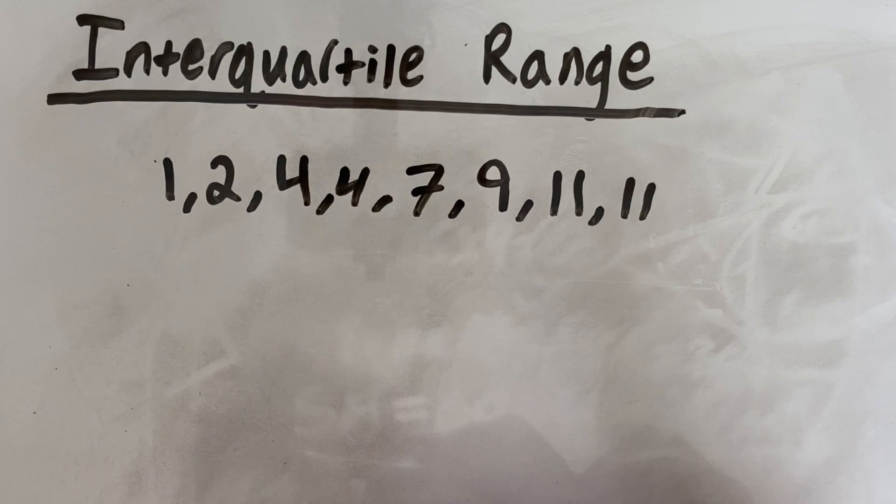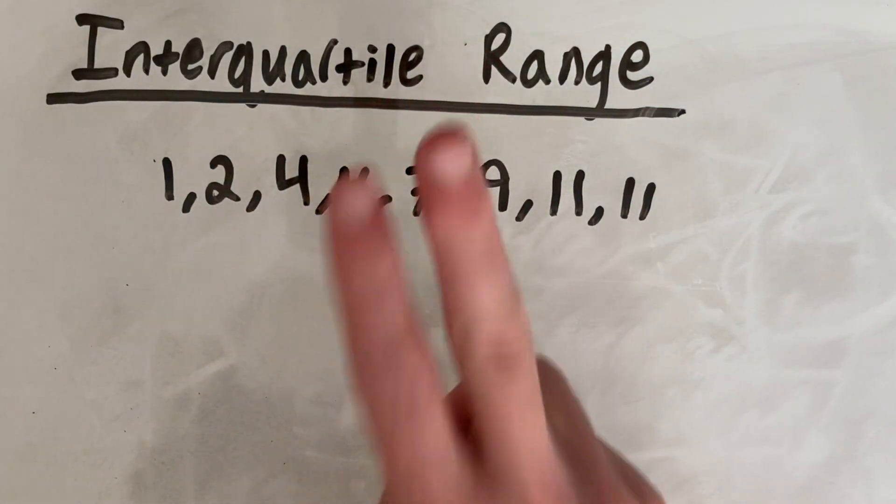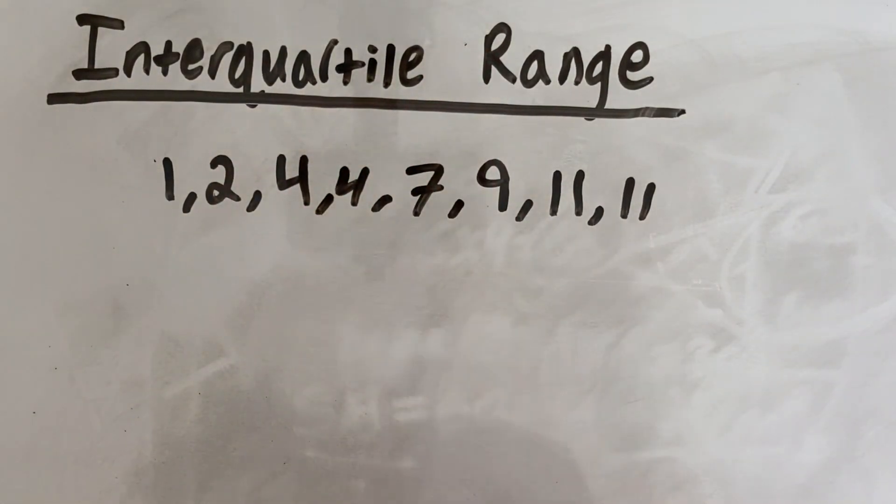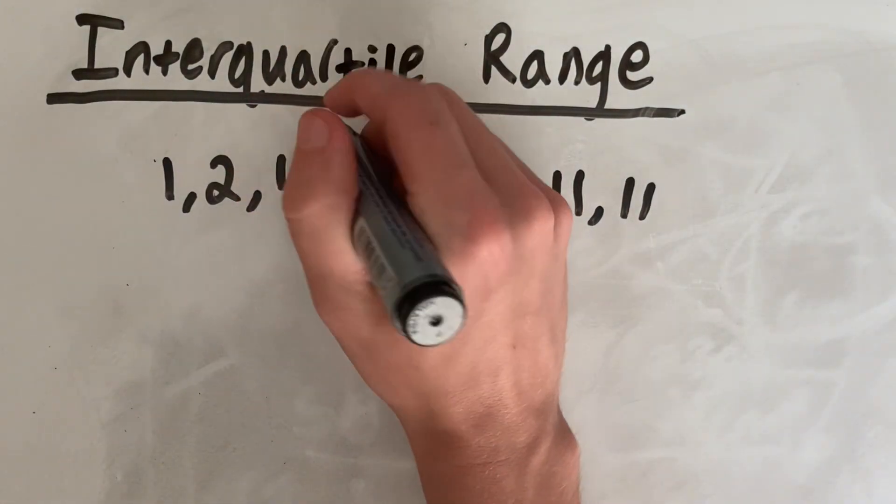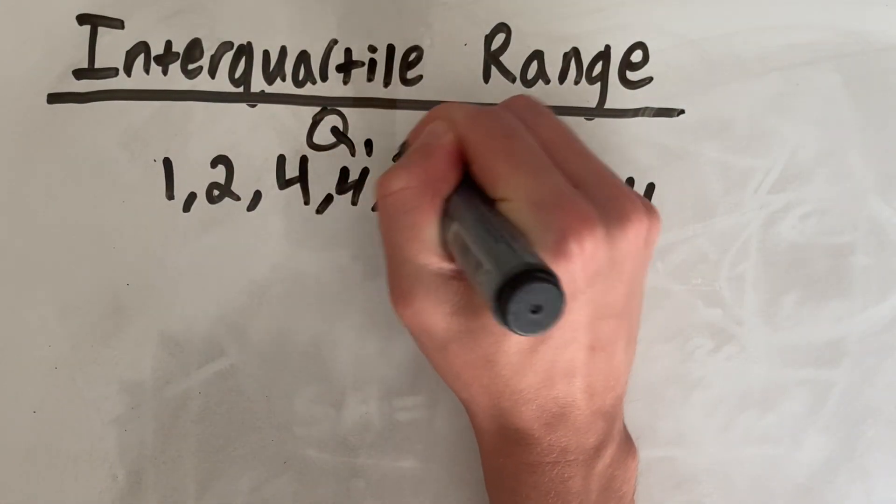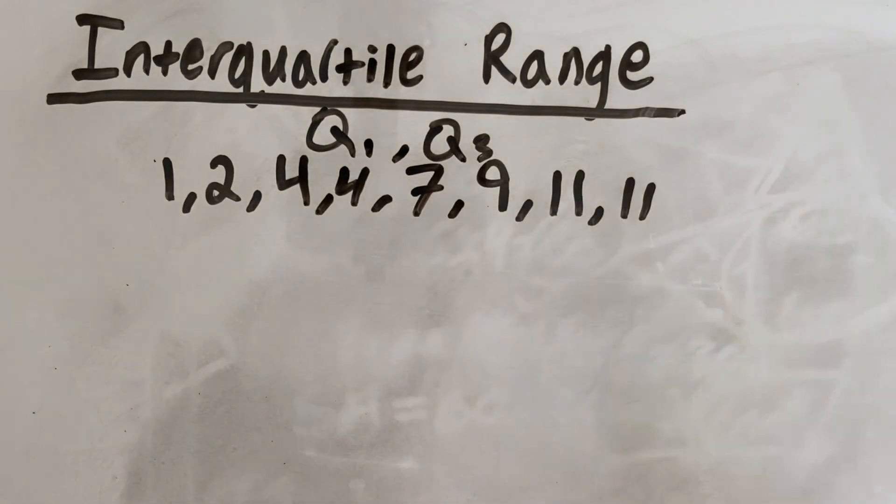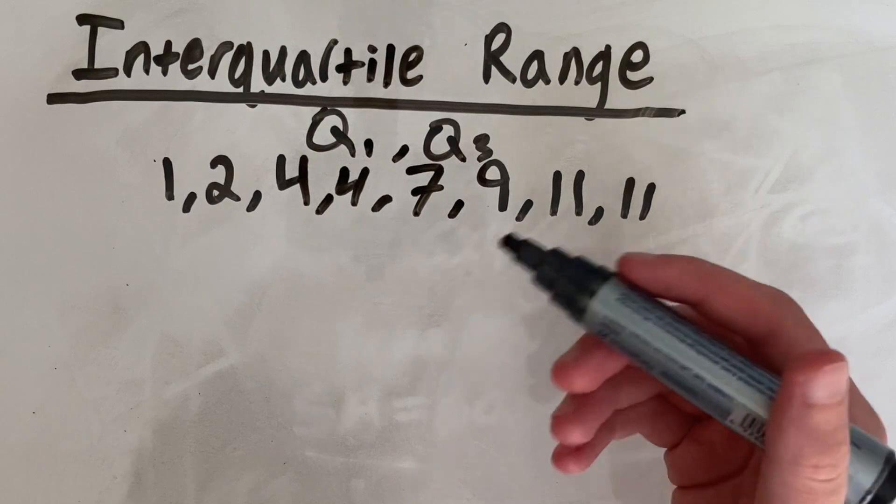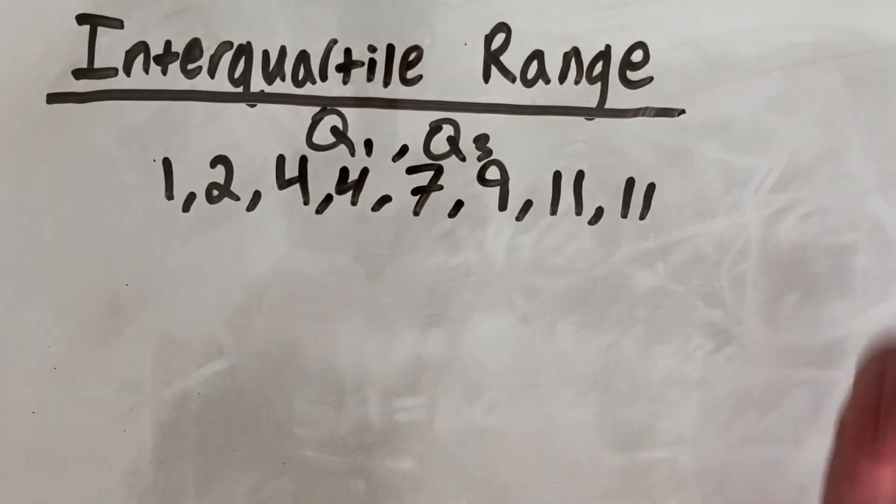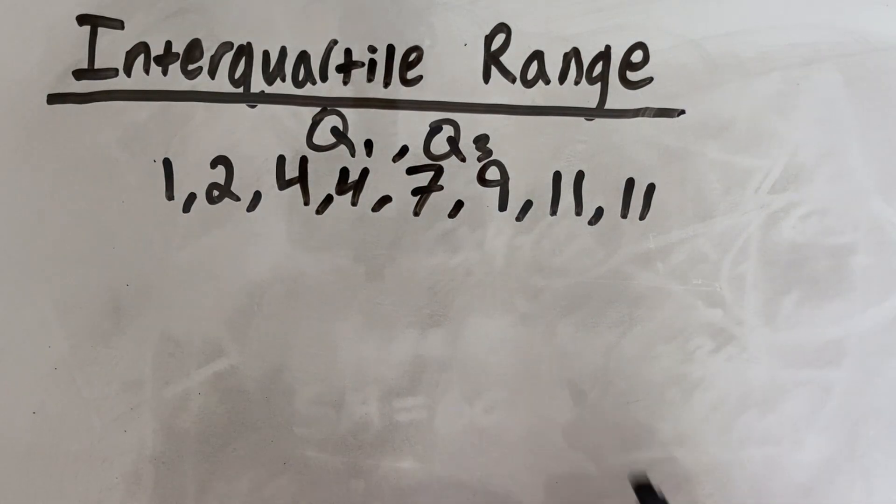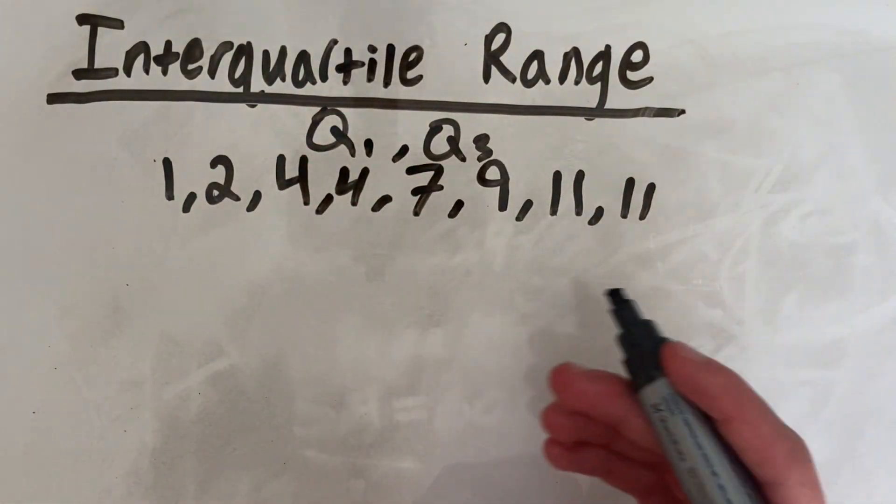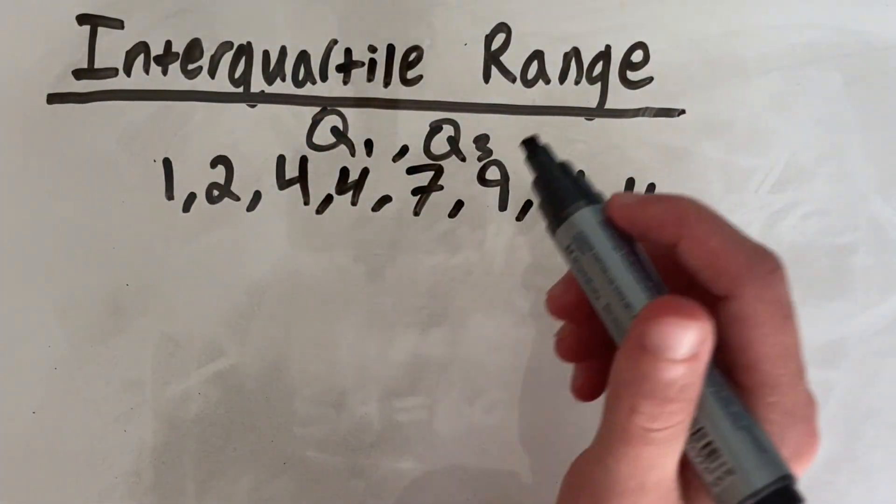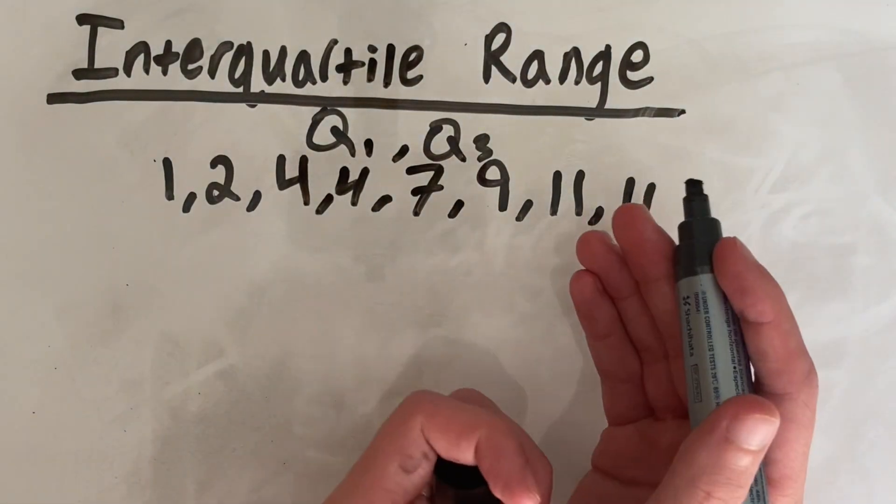Once you have done that, there's two pieces of information we need to find the interquartile range, and that is your Q1 and your Q3. Q1 just stands for quartile 1 and Q3 is quartile 3. And using those two pieces of information, we can get our interquartile range, which is simply equal to Q3 minus Q1.